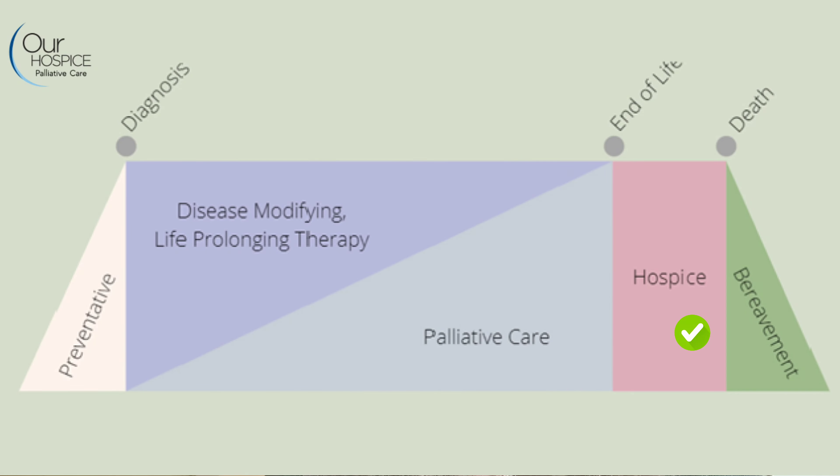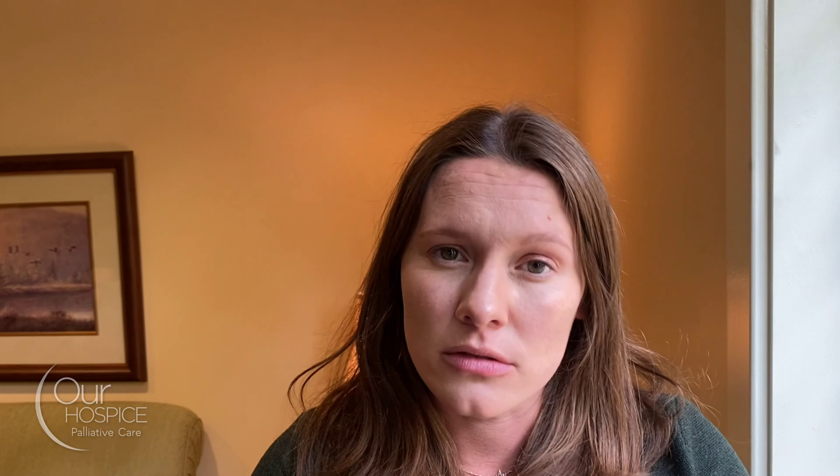When we get to end of life, or a prognosis of six months or less, that's where we transition patients from disease-modifying and life-prolonging therapy to hospice — which is where we 100% focus on comfort care, making sure patients are getting time with their families and loved ones. We're focused entirely on symptom management and comfort care.